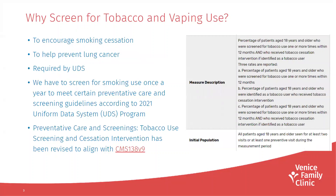So why screen for tobacco and vaping use? First, to encourage smoking cessation and help prevent lung cancer. It's also required by the UDS — we have to screen for smoking use once a year to meet certain preventative care and screening guidelines, according to the 2021 Uniform Data System Program. The tobacco use screening and cessation intervention has been revised to align with CMS 138b9.